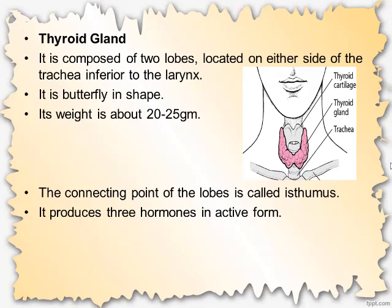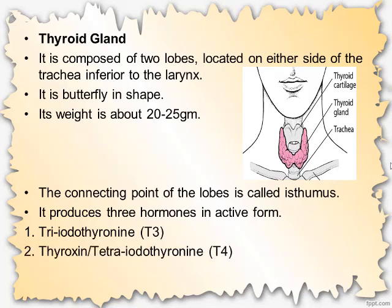The connecting point of the two lobes is called the isthmus. The thyroid gland produces three hormones in active form: number one, triiodothyronine, also called T3; number two, thyroxine or tetraiodothyronine, also called T4; and number three, calcitonin.